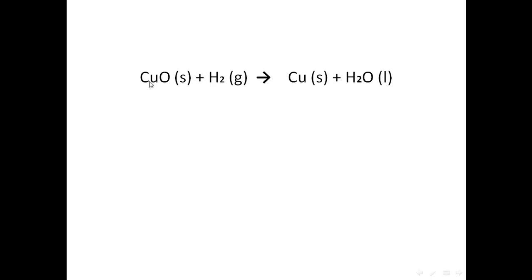Here we have copper oxide. Copper oxide consists of a copper atom and an oxygen atom. Oxygen has a negative oxidation state of negative two, so copper is positive two. Copper here is alone — no different atoms are combined with it, so it has a zero oxidation state. Same for hydrogen. But here hydrogen has a positive one oxidation state and oxygen has negative two.